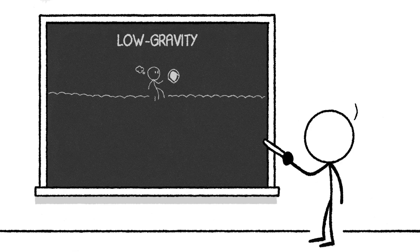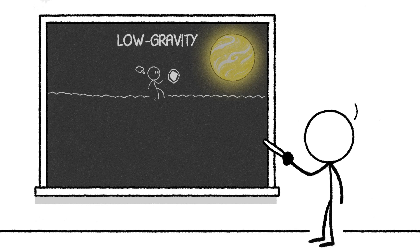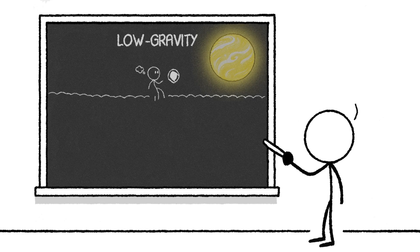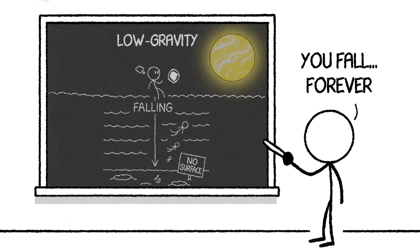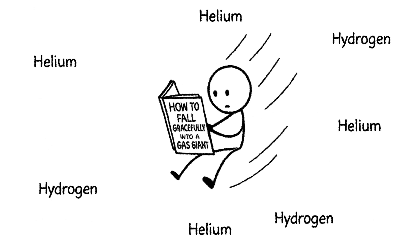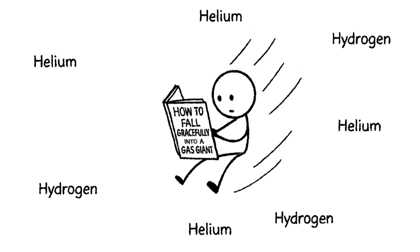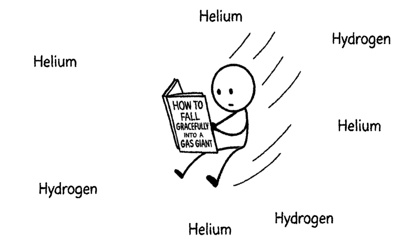Now we enter the low-gravity, high-speed descent phase. Because Kepler-16b is a gas giant, there's no solid surface to land on, ever. You're in continuous freefall through a rapidly thickening atmosphere of molecular hydrogen and helium. Thanks to the low gravity, your acceleration is slow.